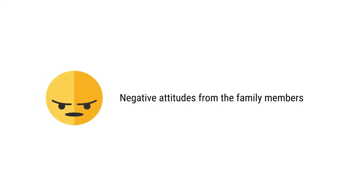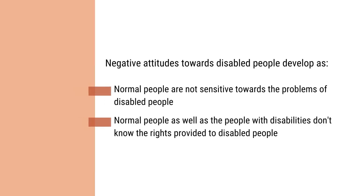Challenges to access to education for people with disabilities start right from the family level, because family members consider it a wastage of time to send their children with disabilities to school. Sometimes the breadwinner of a family is required to dedicate himself or herself to the service of the differently-abled child, which adversely affects their family income. When differently-abled people consider their disability to be a burden and don't take any step to come out of this disabling environment, their condition deteriorates and people around them start victimizing them. Negative attitudes develop when people are not sensitive to their problems nor know their rights, and never try to accommodate the interests of people with disabilities.